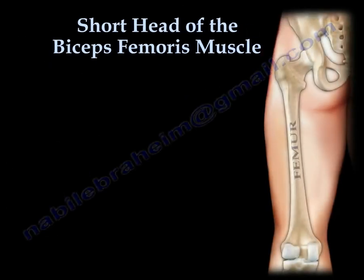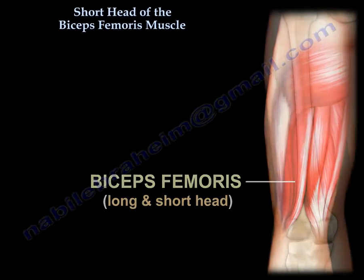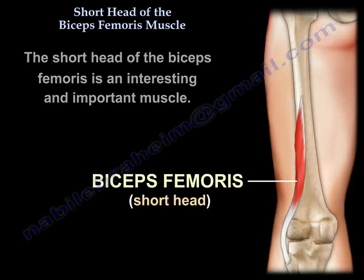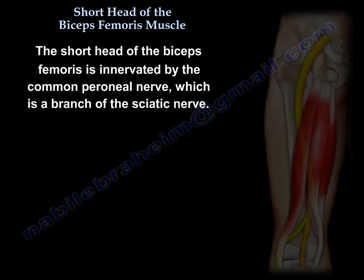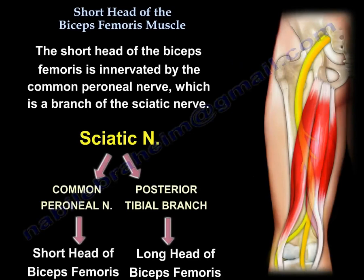The Short Head of the Biceps Femoris is an interesting and important muscle. It is innervated by the common peroneal nerve, which is a branch of the sciatic nerve. The long head of the biceps femoris is innervated by the posterior tibial branch of the sciatic nerve.